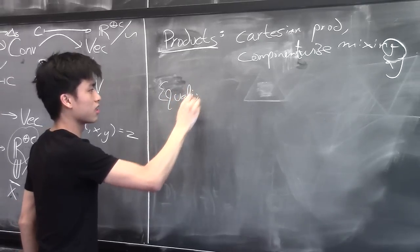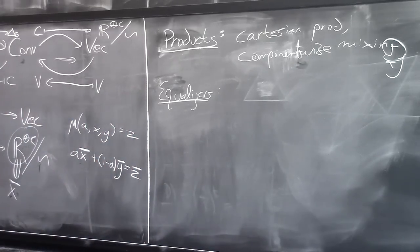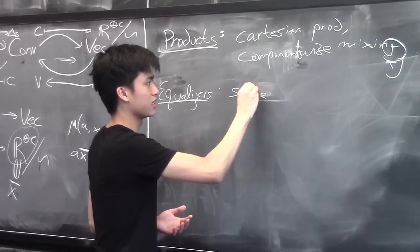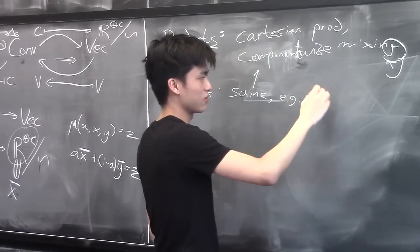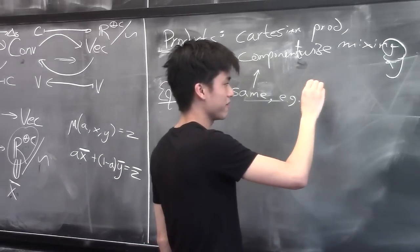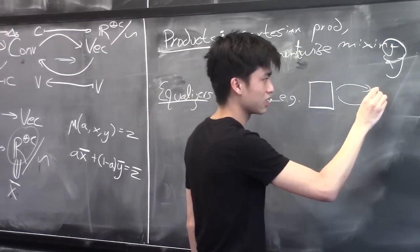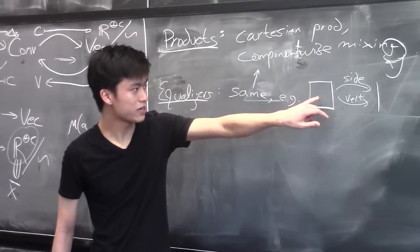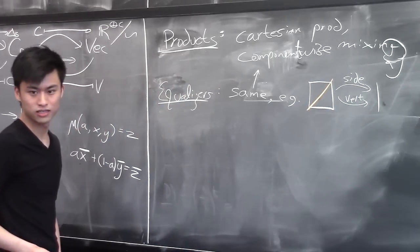For equalizers: it's just the equalizer in Set with mixing inherited from the ambient space — meaning it'll actually be a convex subset. For example, suppose you have a square mapped to the line in two ways — horizontally and vertically. The equalizer will be the subset of points which have the same coordinate in both directions, so the equalizer will be the diagonal.